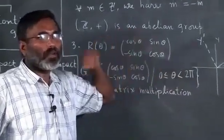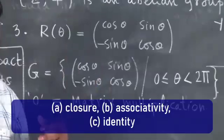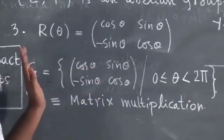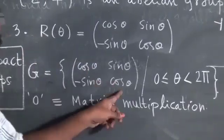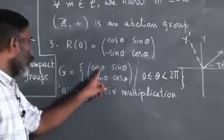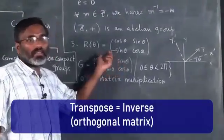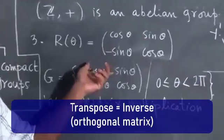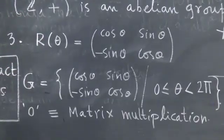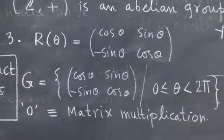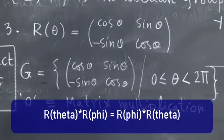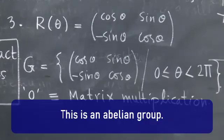Theta plus phi will be another angle in this set. So you have closure, associativity, and identity. What is identity? Theta equal to 0 — no rotation. That is the identity matrix [1,0;0,1], the usual 2×2 identity. For the inverse, every matrix's transpose is its inverse because this is an orthogonal matrix. You can also show — it is trivial — that this is an abelian group because R(θ)·R(φ) = R(φ)·R(θ).